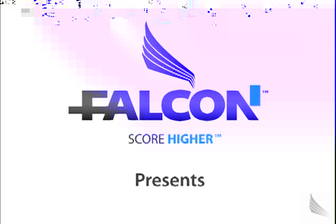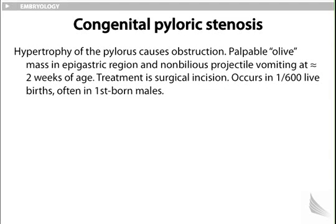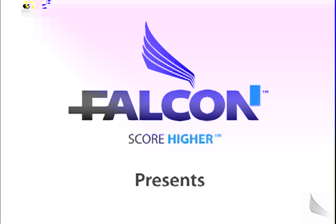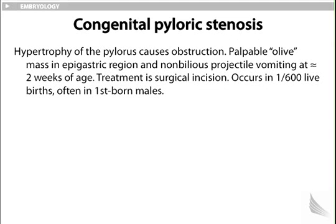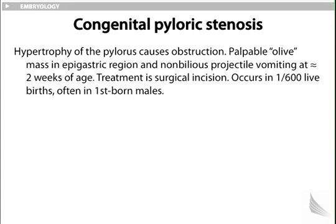Congenital pyloric stenosis involves hypertrophy of the pylorus causing obstruction. The pylorus is at the distal end of the stomach, distal to the antrum, just before entering the first part of the duodenum. Clinically, there is a palpable olive mass in the epigastric region and non-bilious projectile vomiting at approximately two weeks of age. Treatment is surgical incision. Occurs in approximately 1 in 600 live births, often in firstborn males.